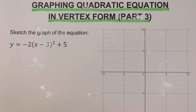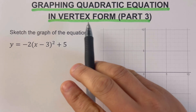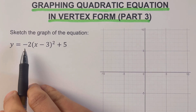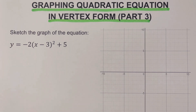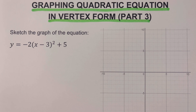Hello everyone! This video focuses on graphing quadratic equations in vertex form, and this is the third part where the absolute value of a is greater than one. Before we go further, please feel free to check out the description box below for the links to the other series of topics related to graphing quadratic equations in vertex form. Before we jump into the example, let's have a review of the basics.